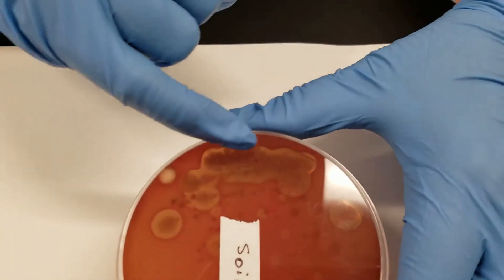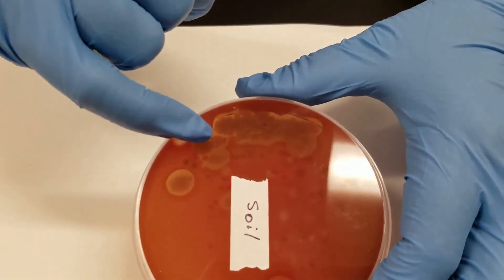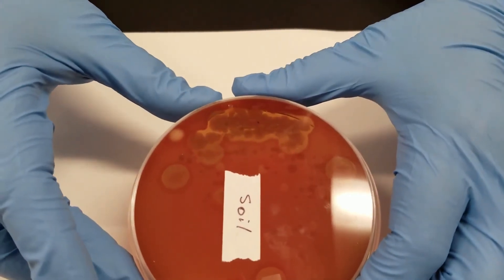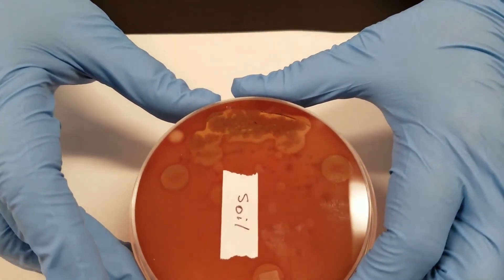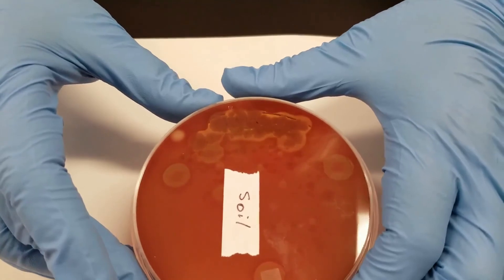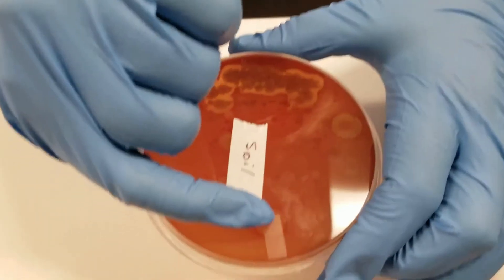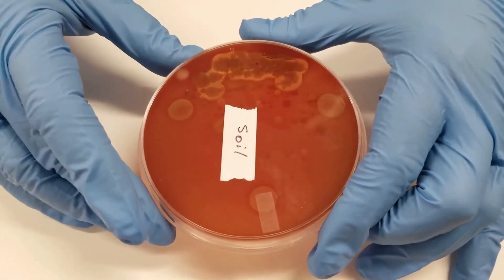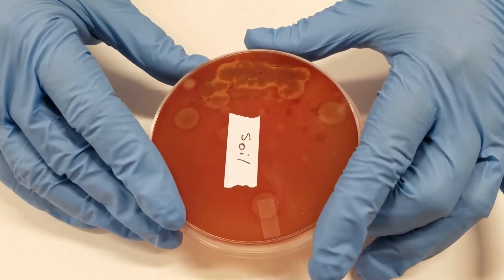This large group of bacteria here, some of these other areas where there's the clearing. That indicates hemolysis, which is the breakdown of the red blood cells. When you see complete clearing of that, that typically is indicative of more pathogenic organisms. So we are not opening this plate.